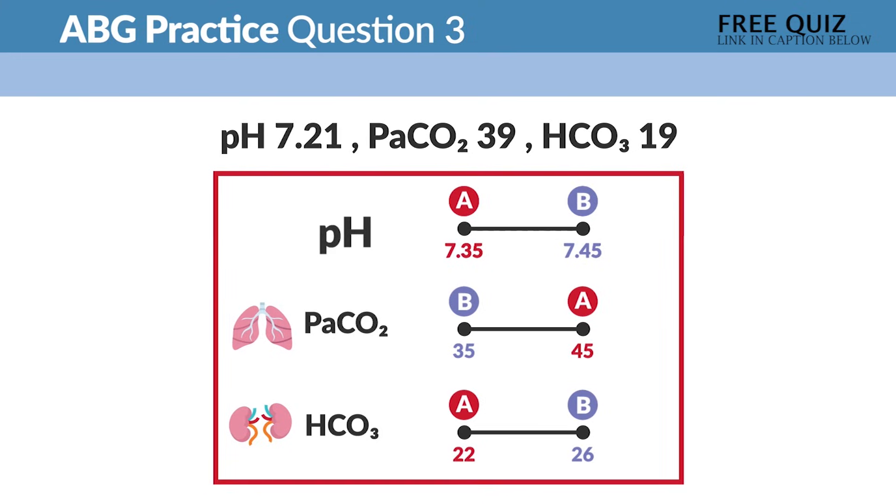So the answer is respiratory alkalosis that is uncompensated. Okay, the next question, ABG practice question number three: the pH is 7.21, PaCO2 is 39, and HCO3 is 19.